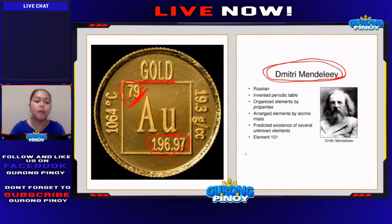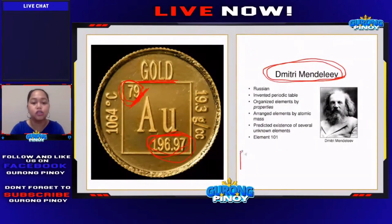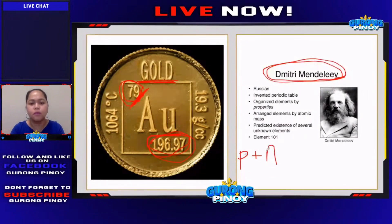Your atomic mass would be protons plus neutrons — protons plus neutrons. This comes out on the LET sometimes.